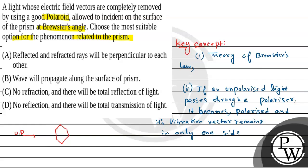Now, before passing, the unpolarized light has vibration vectors in two perpendicular sides. But after it passes through the polarizer, only one side of the vibration vector will remain, and it will become polarized.